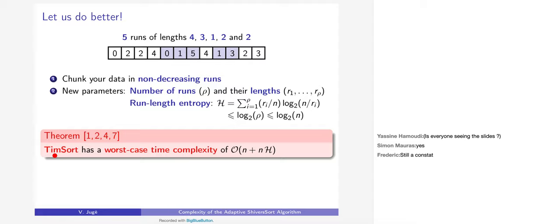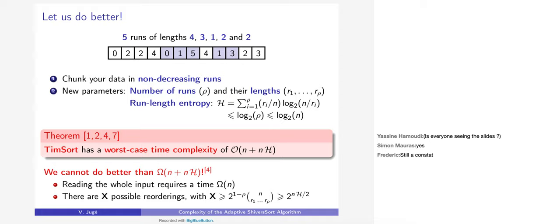TimSort has this O(n + nH) complexity, meaning that if your array is already quite well sorted it runs faster — which explains why this algorithm was chosen in practice in Java and Python. With the same arguments as before — each comparison gives one bit of information — we can prove that it is infeasible in general to do better than n + nH up to a multiplicative constant, because you need to read the whole input and distinguish possible reorderings.